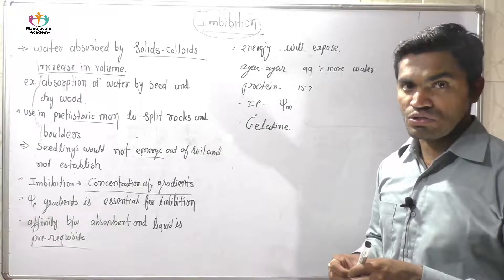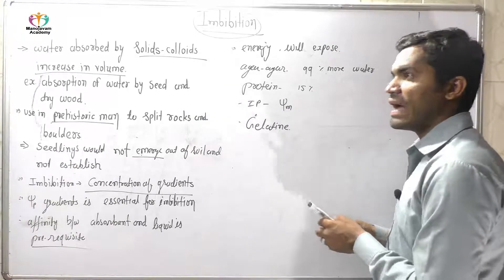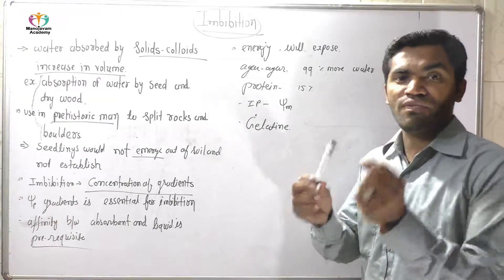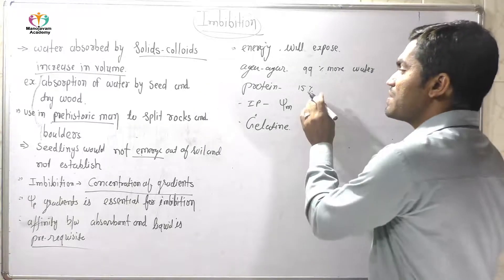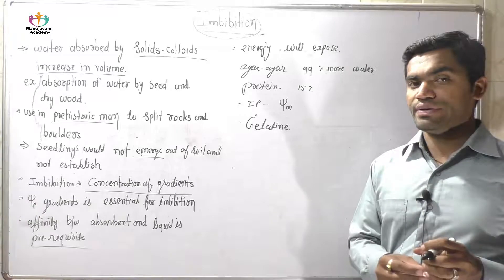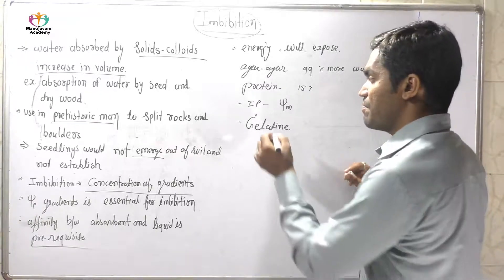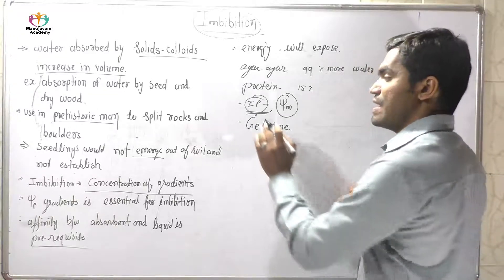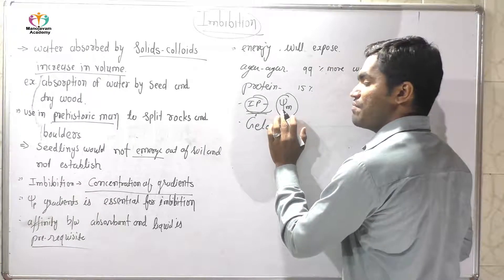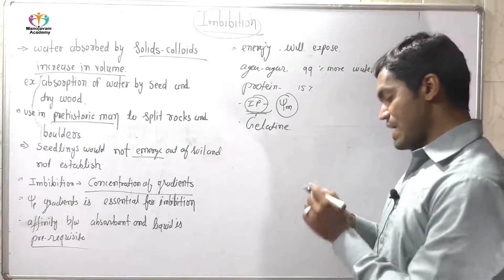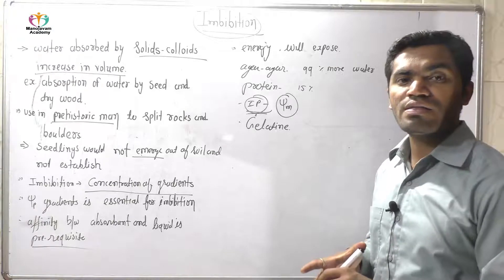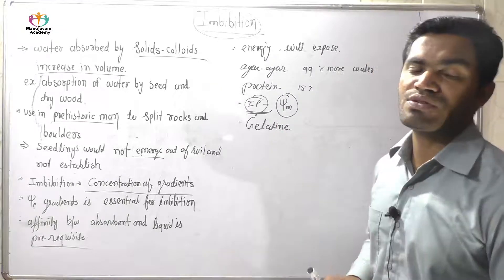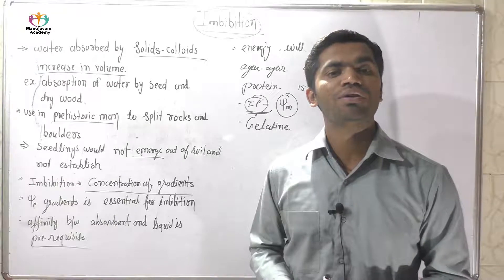Sometimes energy is also produced during imbibation pressure. Agar-agar powder can absorb water 99% more than its own weight. Some proteins can absorb 50% of water more than their weight. Imbibation pressure is denoted as IP and the imbibation potential is denoted by psi-m (ψm). Gelatin, one type of gum, also absorbs water — gelatin is also an example of imbibation. Imbibation is very important for the growth of seeds.